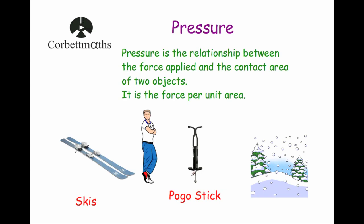Whereas on a pogo stick, whenever he stands on it, his weight — the downward force — is concentrated on a very small area. So he's going to sink down into the snow because there's a very high pressure.